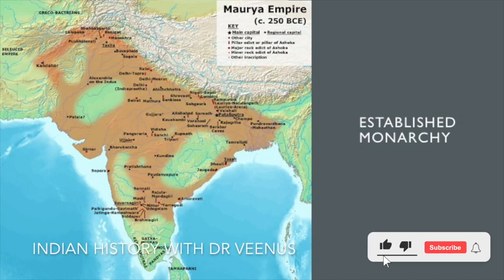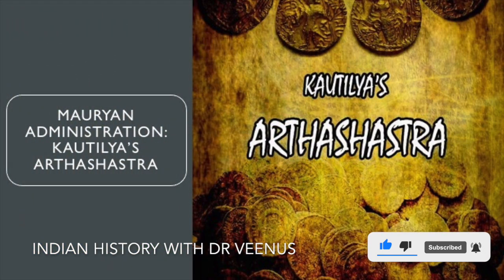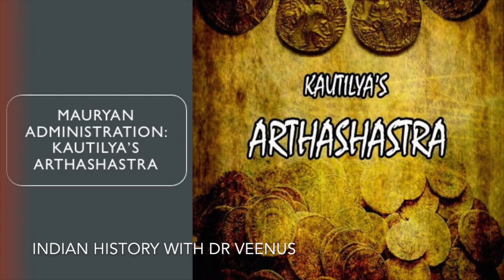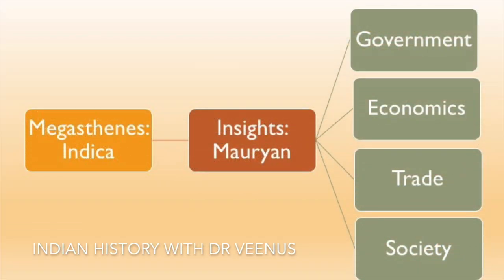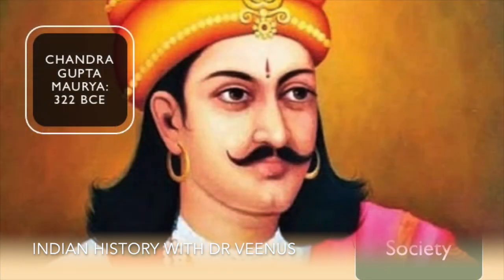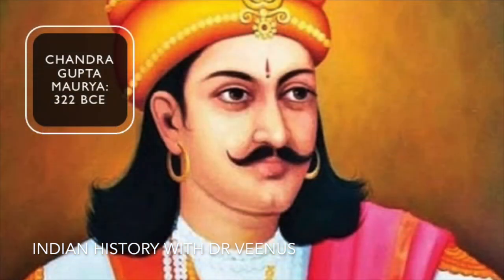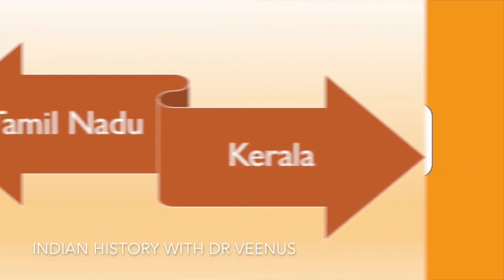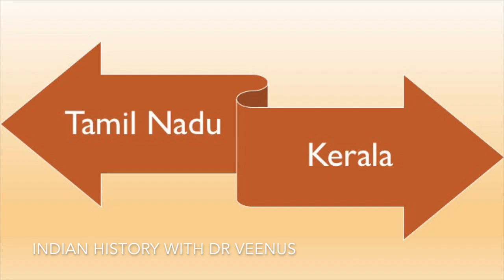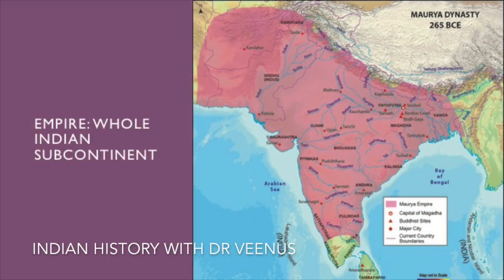The Mauryan dynasty was recognized for establishing monarchy in India. The Mauryan administration is described in depth in Kautilya's Arthashastra, which was seen to be the most reliable source for information about Mauryan administration. Megasthenes's Indica similarly sheds insight on the Mauryan government, economics, trade and society. Chandragupta Maurya established the Mauryan Empire in 322 BCE, which lasted until 180 BCE. Except for Tamil Nadu and Kerala, the Mauryan Empire spanned the whole Indian subcontinent.